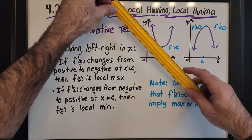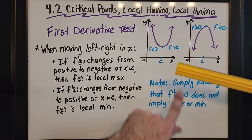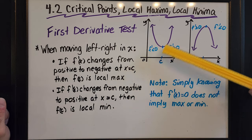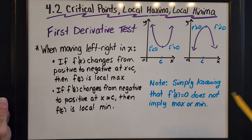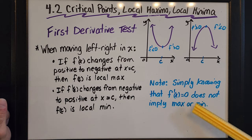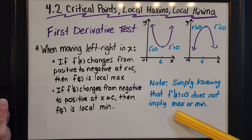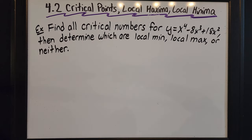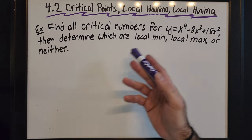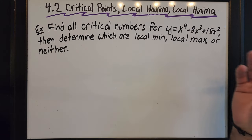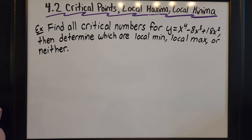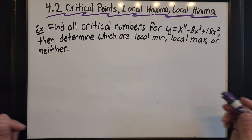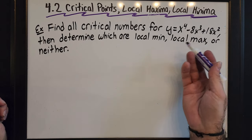Likewise, if f prime at x changes from negative to positive at point c, then c is a critical point and we know there's a local min — but we have to have that change in increasing and decreasing. Simply knowing that f prime of x equals zero does not imply a max or min. In the next example, you're going to see exactly why. For this example, we have to find all the critical numbers, then determine which are local min, local max, or neither — because 'neither' is something new we'll be experiencing.